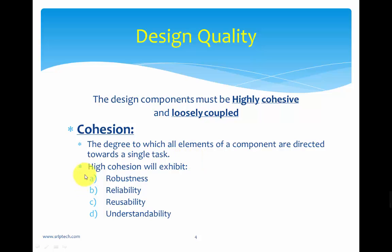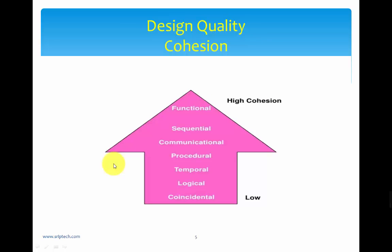Highly cohesive modules exhibit certain desirable properties. First is robustness — the modules are error-free and correction of errors is easier. Second is reliability — you can trust those modules because they work consistently. Third is reusability — you can use those modules in any project. Fourth is understandability — you can read the modules easily, making the design much easier to understand.